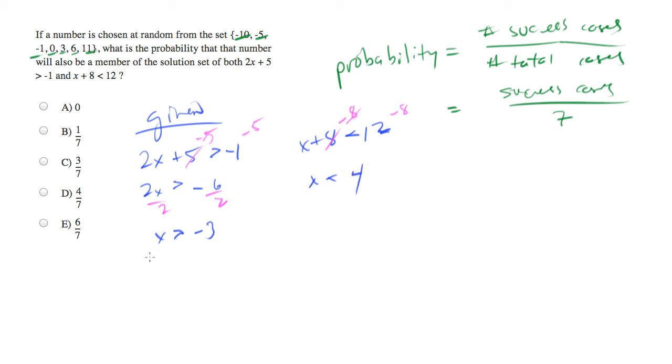So let's go back, now we have two sets of criteria that we can use to filter our set. Let's go to our set and make sure that the numbers that we're counting in our success cases meet both criteria. So negative 10 is not greater than negative 3, neither is negative 5. Negative 1, 0 and 3 make the cut. 6 is not less than 4 and neither is 11.